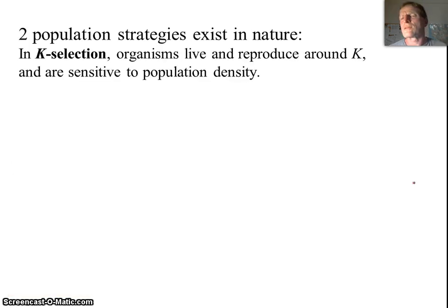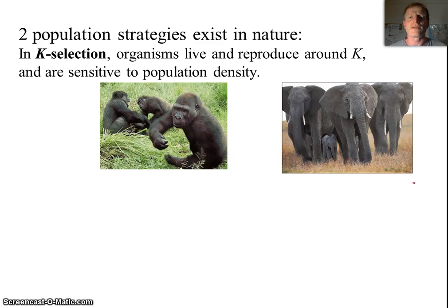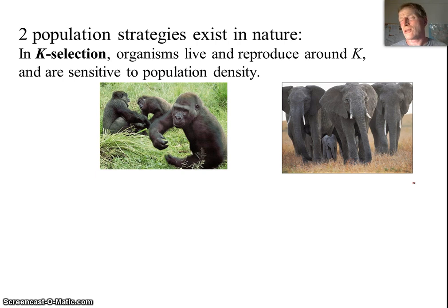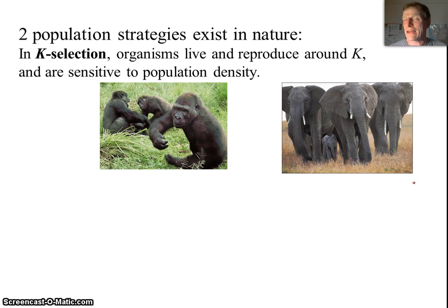Let's talk about some strategies that populations can use to maintain their numbers. One we see in large mammals like apes and elephants is called K-selection. These populations have relatively low birth rates and try to maintain relatively high numbers, keeping their populations close to carrying capacity. They are slow-growing organisms. These are also species that are usually endangered, because when we destroy habitat or hunt them, they can't rebound — they can't reproduce fast enough to sustain their numbers.